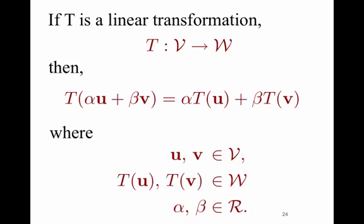Here's a theorem. If T is a linear transformation mapping V to W, then T of (alpha*u + beta*v) equals alpha*T(u) plus beta*T(v), where u and v are in vector space V, T(u) and T(v) are in vector space W, and alpha and beta are real number scalars. This is just a restatement of the definition of linear transformation from chapter one — that the transformation of u plus v is the transformation of u and v, and the transformation of alpha*u is alpha times the transformation of u.